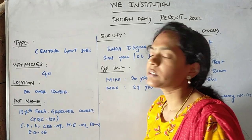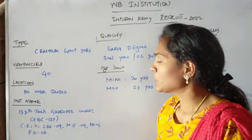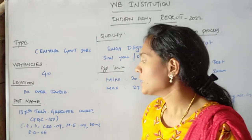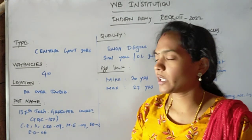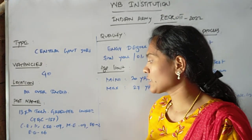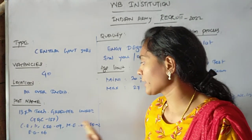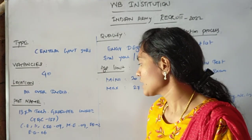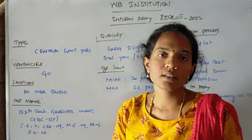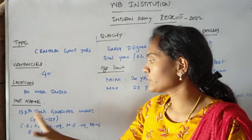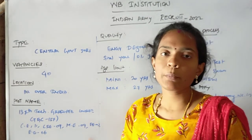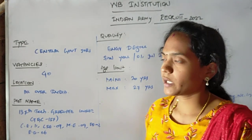The 40 vacancies are divided department-wise: Computer Science Engineering has 9 vacancies, Mechanical Engineering has 9 vacancies, Electrical Engineering has 3 vacancies, Electronics Engineering has 6 vacancies, and Civil Engineering has the remaining vacancies.